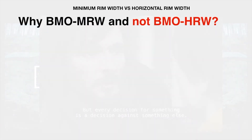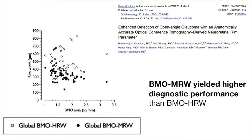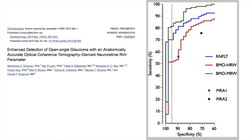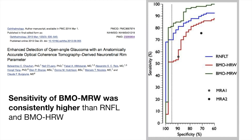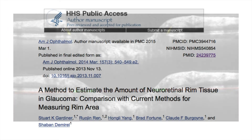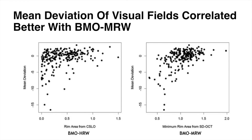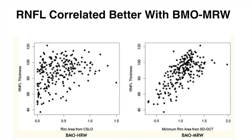Chauhan et al. revealed that BMO minimum rim width yielded a higher diagnostic performance than BMO horizontal rim width. Also, the sensitivity of BMO-MRW was consistently higher than both RNFL and BMO-HRW. A study on glaucomatous neuroretinal rim tissue revealed that the mean deviation of visual fields correlated better with BMO-MRW than with BMO-HRW, and retinal nerve fibre layer thickness also correlated better with BMO-MRW than with BMO-HRW.